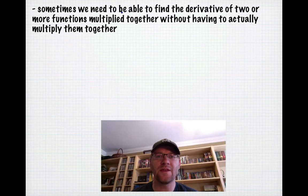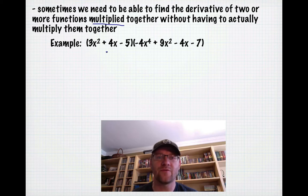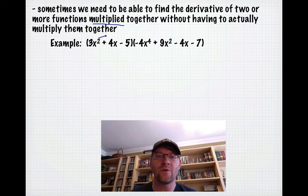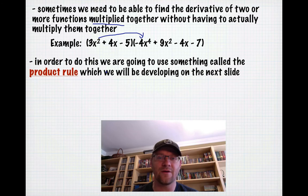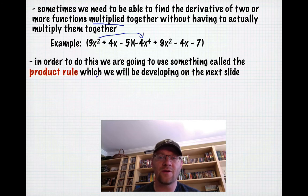Sometimes we need to find the derivative of two or more functions multiplied together without actually multiplying them out first. For example, (3x² + 4x − 5) multiplied by (−4x⁴ + 9x² − 4x − 7). We don't want to expand everything and then take the derivative of the result. There's something called the product rule that will help us, and we'll develop it on the next slide.